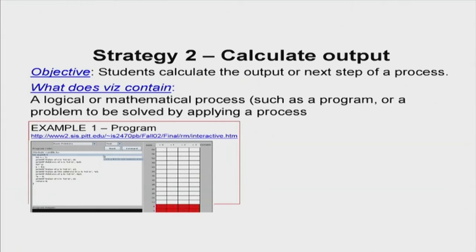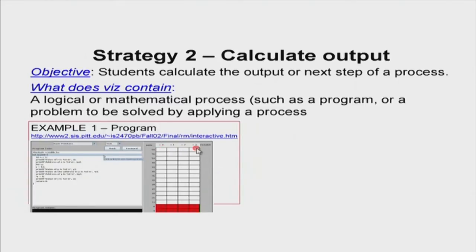Here are two examples. The first is an interface with a program related to the topic of pointers and variables. When you click the forward button, the program runs step by step — each line is highlighted and the values of four variables are displayed in a table on the right. Step by step as the program runs, students can see how it gets executed and what values the variables take.